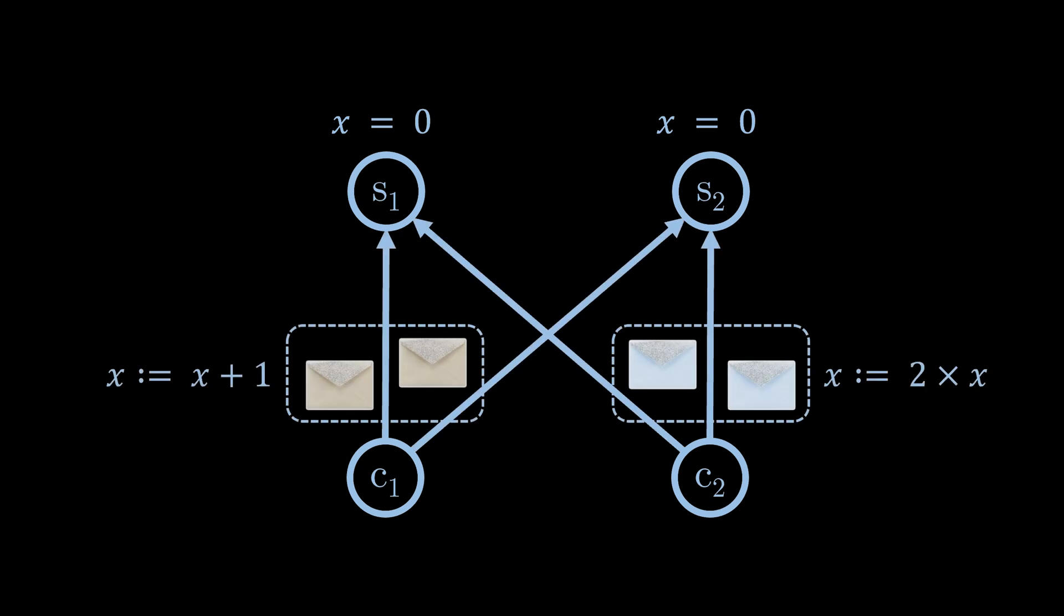Therefore, we will now consider a distributed system consisting of multiple clients and servers. In the example here, we have two clients and two servers. The two servers are meant to maintain the same state. We will keep it simple with a state that consists of a single numeric variable x. The clients send commands to change the value of x.